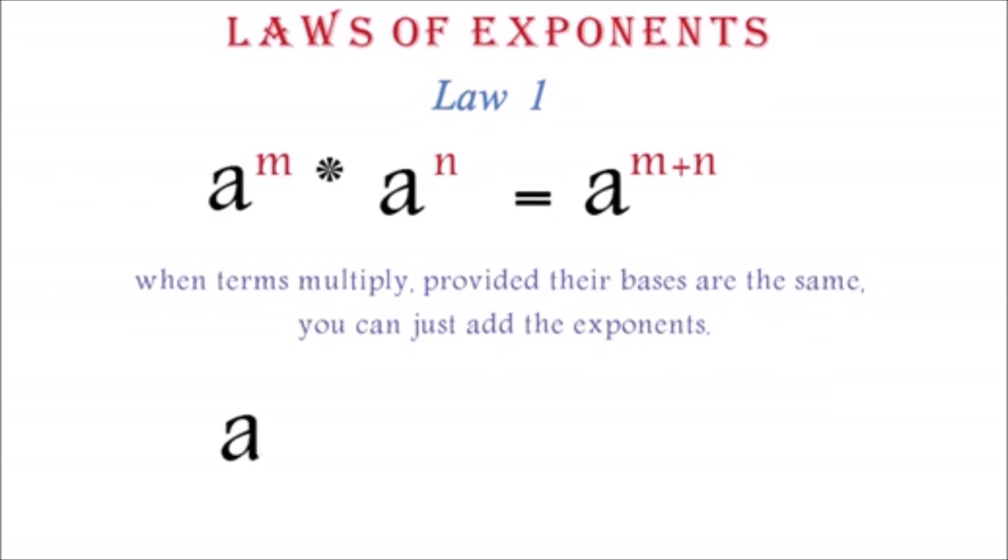Example: a squared times a cubed equals a exponent 2 plus 3, which is equal to a exponent 5. Since we have done multiplication already, this is familiar.